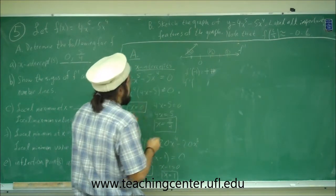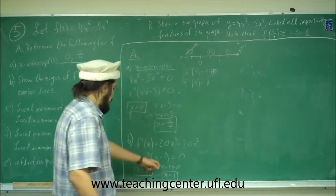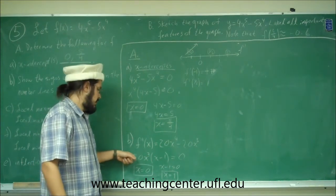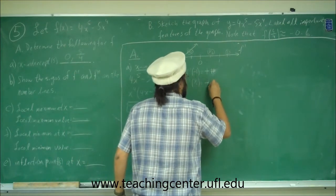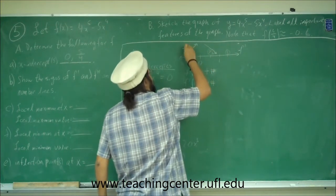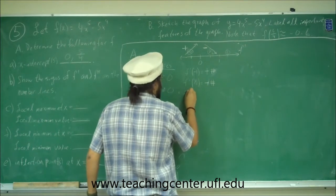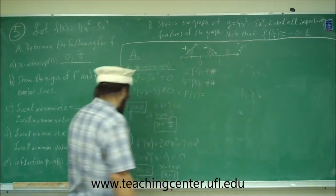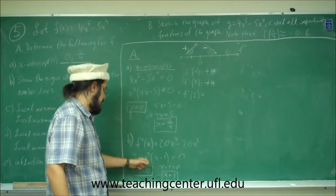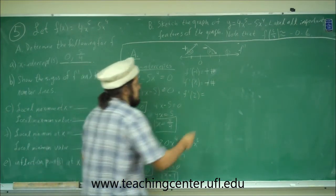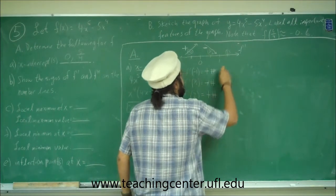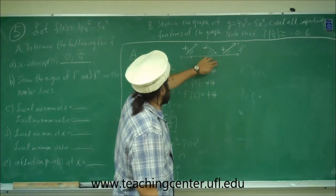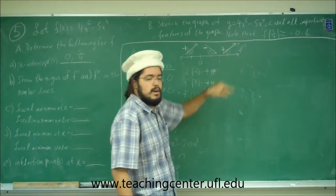For f prime of 1/2: 1/2 minus 1 is negative 1/2, and 1/2 cubed is positive. Positive times negative is negative — so f is decreasing on (0,1). For f prime of 2: 2 minus 1 is positive 1, and 2 cubed is positive — positive times positive is positive, so increasing. The signs for f prime are: positive from negative infinity to 0, negative from 0 to 1, and positive from 1 to infinity.